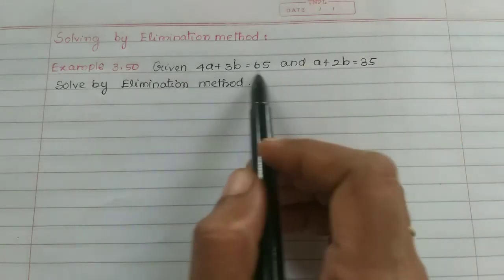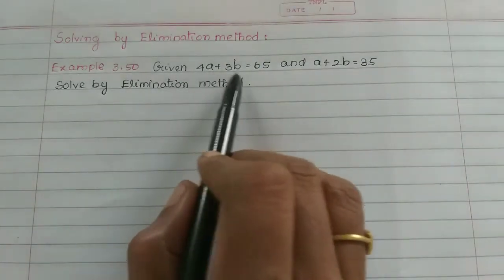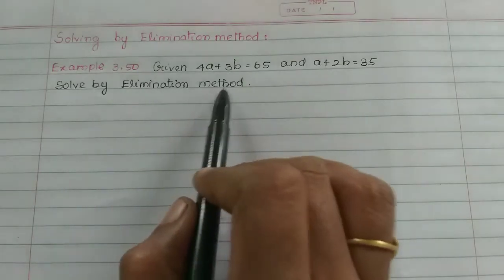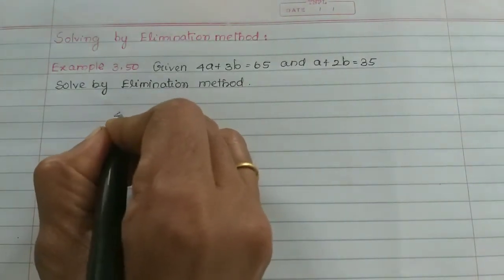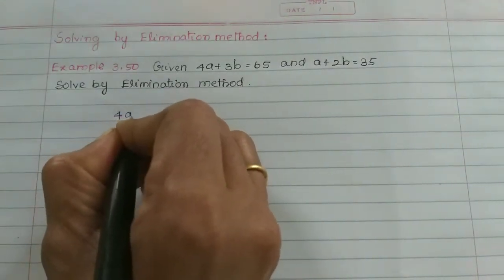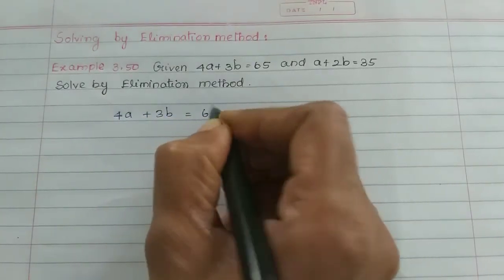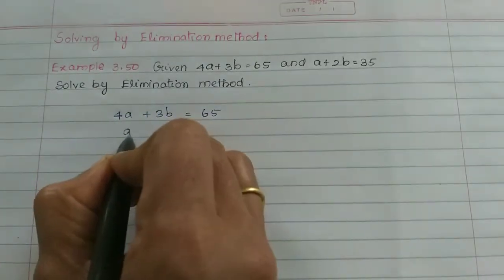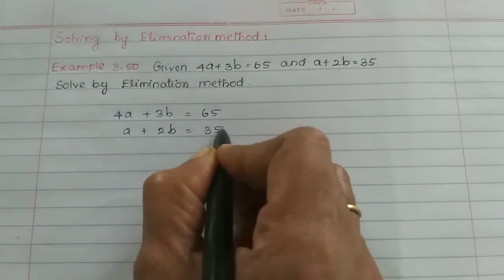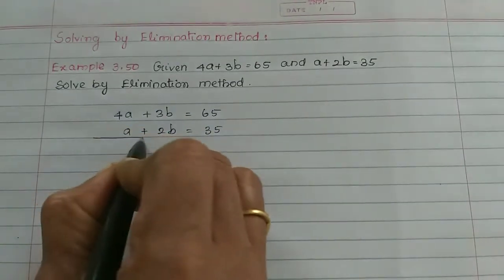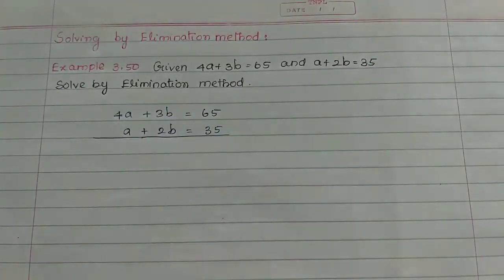Now we have two equations. Solve for a and b values using the elimination method. The first equation is: 4a plus 3b is equal to 65. The second equation is: a plus 2b is equal to 35. Now we will eliminate either a or b.